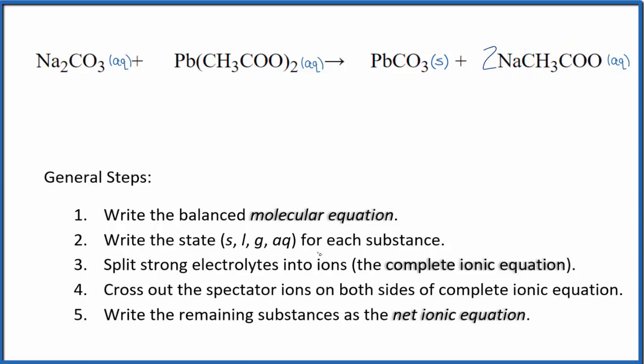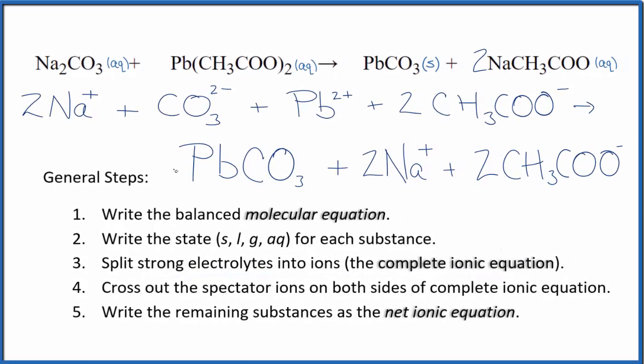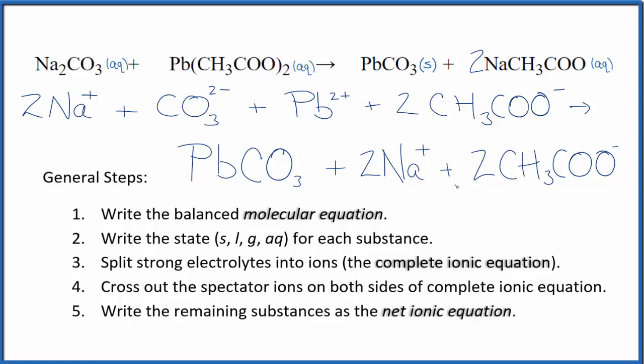We have our states, now we can split the strong electrolytes into their ions. That'll give us the complete ionic equation. So this is the complete ionic equation that we have - two of these sodium ions, that's why we have the coefficient two here. Then we have two acetate ions, that's why we have the two in front of the acetate ion here.